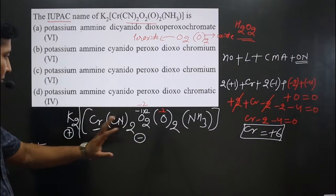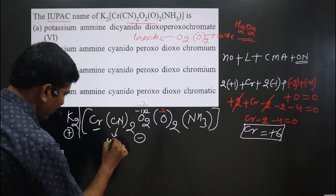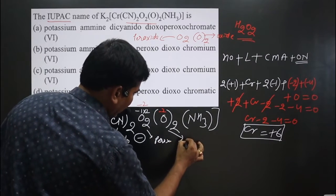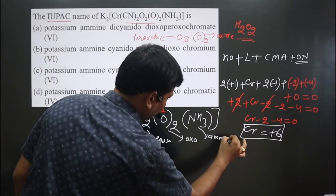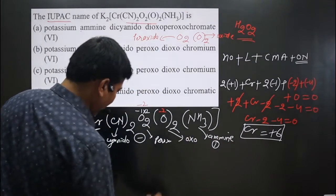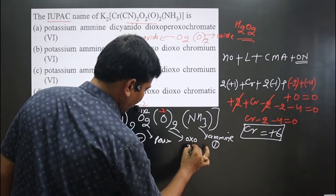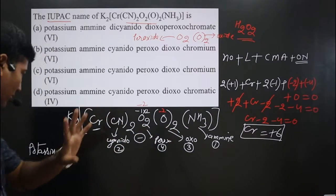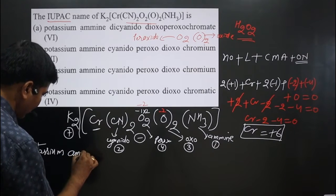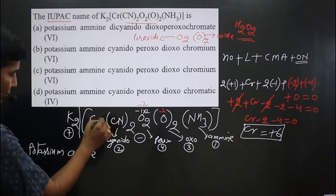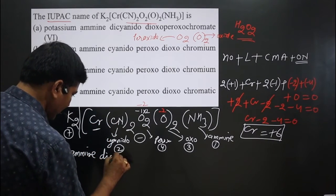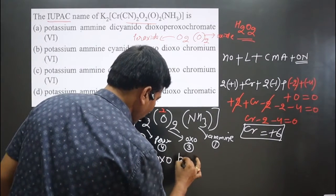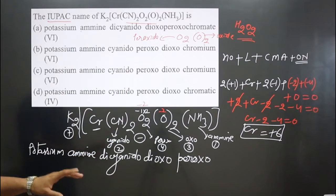Next, we arrange the ligands in alphabetical order. The ligands are: cyanido (from CN, starts with C), peroxo (O₂²⁻, starts with P), oxo (O²⁻, starts with O), and amine (NH₃, starts with A). Alphabetically: amine (A) comes first — only one molecule, so just 'amine'; then dicyanido (two CN ligands, C); then dioxo (two oxide ligands, O); and then peroxo (P).